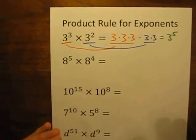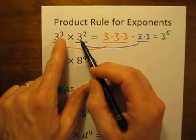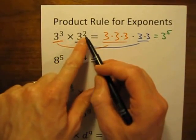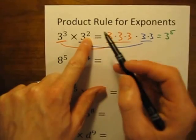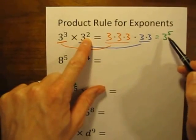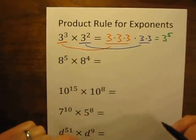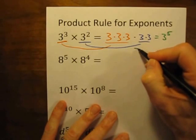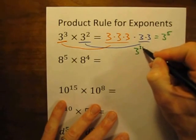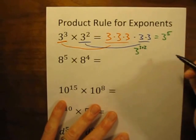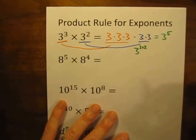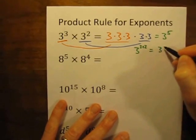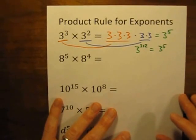So you might notice: we've got exponents of 3 to the 3rd and 3 to the 2nd power, and when we simplify that it ends up as 3 to the 5th power. You might think, wait a second — that sounds like it's the same as 3 to the 3 plus 2 power. And you'd be exactly right. That would be 3 to the 5th power. Exactly.